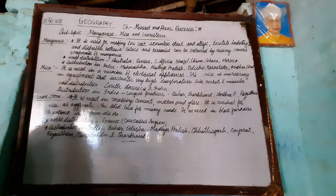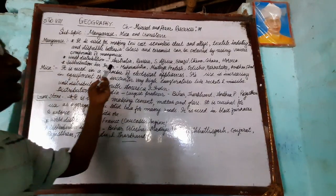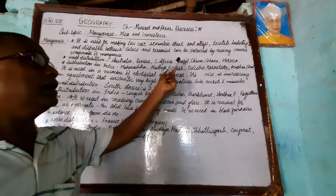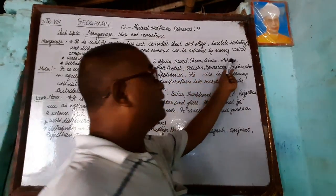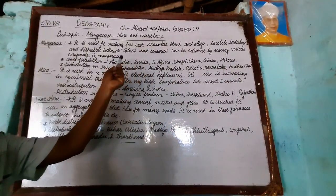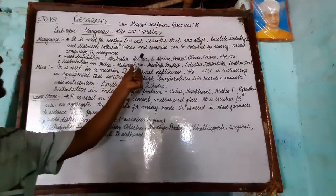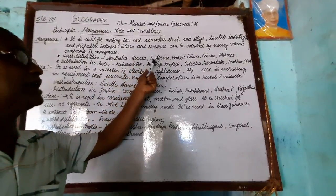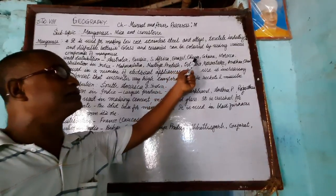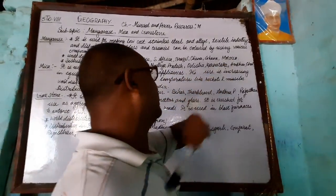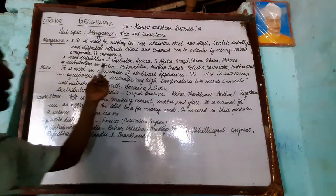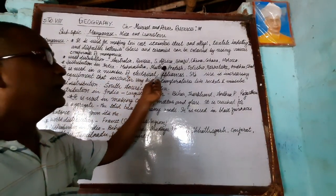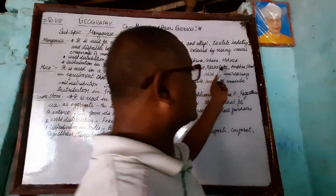In the world, Australia is the leading producer of manganese. Other major producing countries include Russia, South Africa, Brazil, China, Ghana, and Morocco. In India, manganese is found in Maharashtra, Madhya Pradesh, and Orissa.